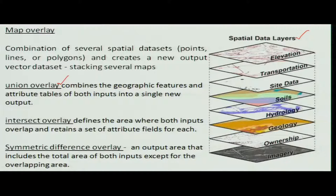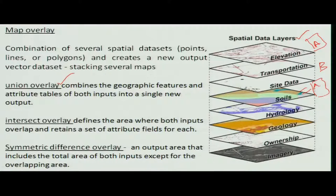Combination means there is one layer A and another layer B. When you want A and B together, then A will be there, B will also be there, and there will be an A+B combined result in the derivative map. This type of map overlay is possible in the geographical information system.